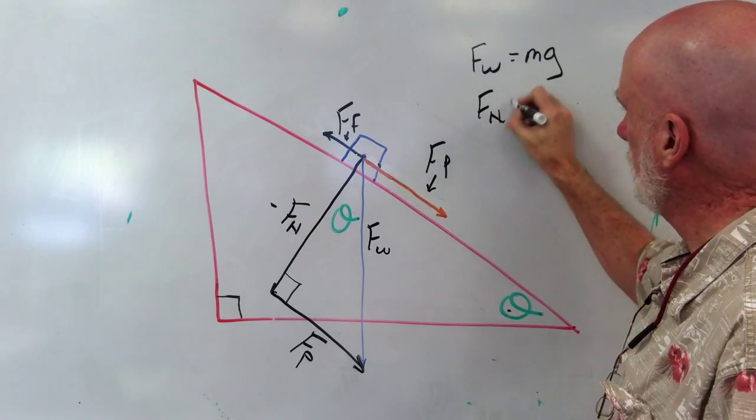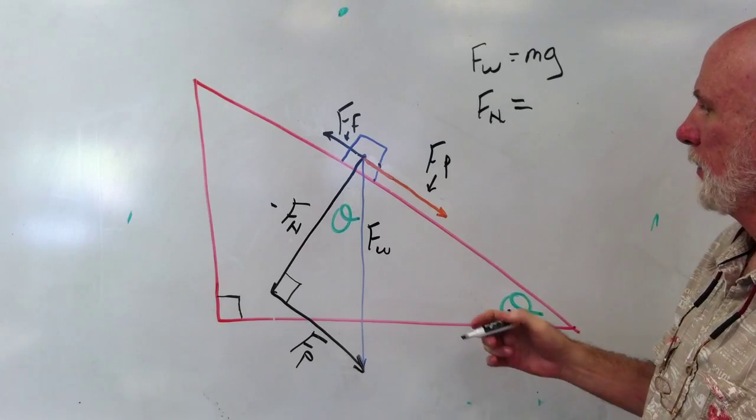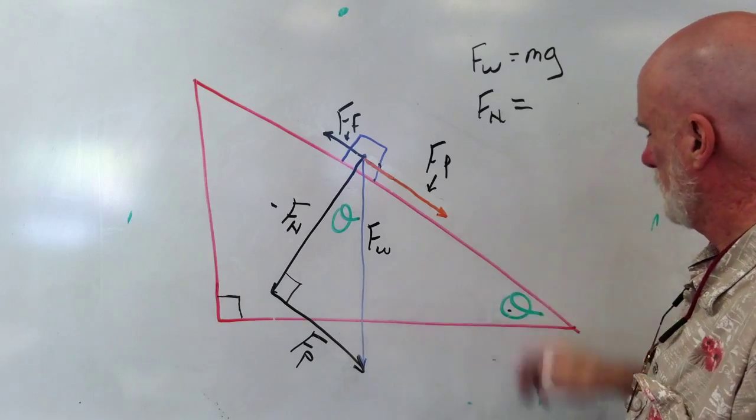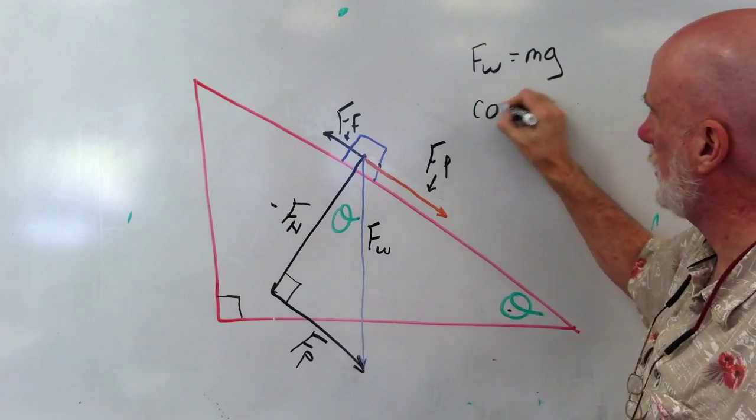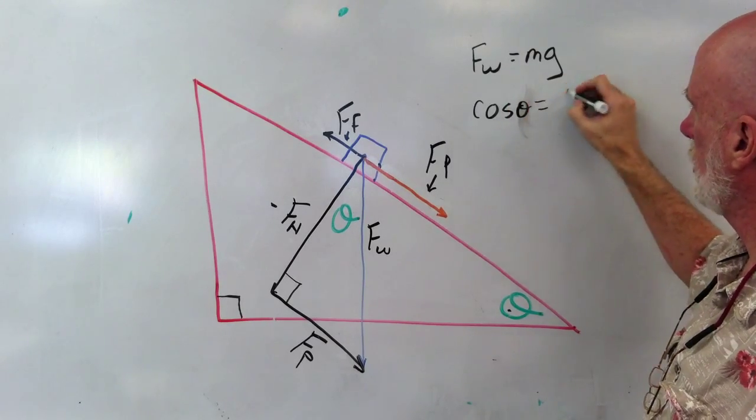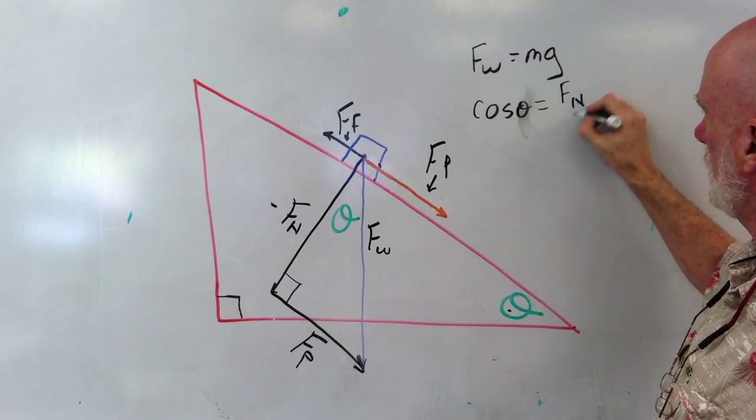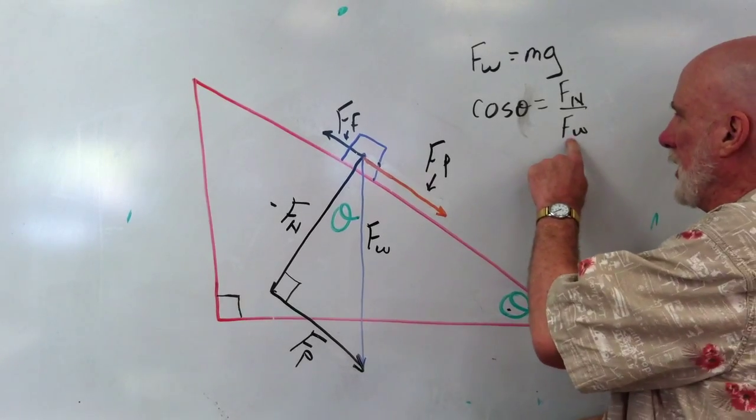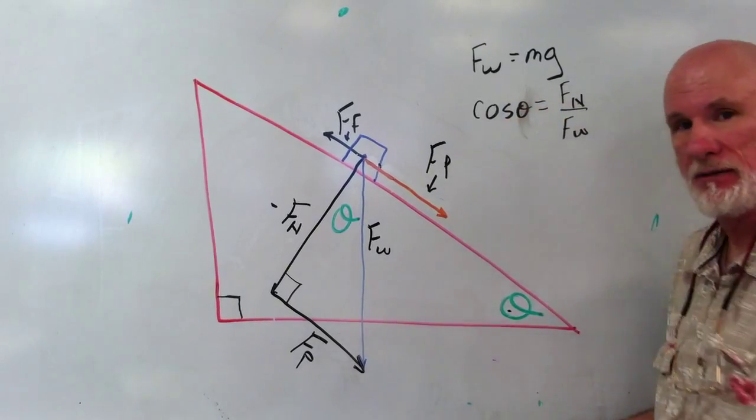So Fn would be adjacent over hypotenuse. It would be adjacent over hypotenuse, so that would be cosine. Cosine theta equals adjacent over hypotenuse. So it would be Fw times cosine theta equals Fn.